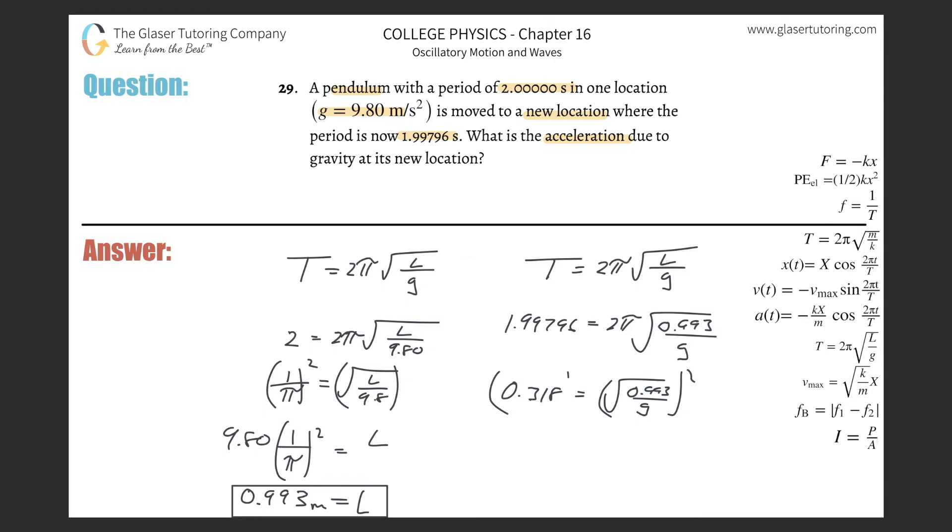Square both sides to get rid of the square root. So it's 0.318 squared. That's going to be equal to 0.993 divided by g. Solve this thing for g.